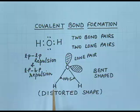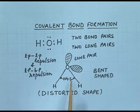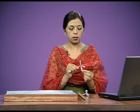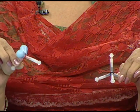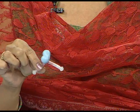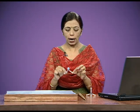Due to lone pair–lone pair and lone pair–bond pair repulsions, the water molecule has a distorted bent shape, and the H-O-H bond angle is 104.5 degrees. Comparing with a regular tetrahedron: when all four electron pairs around the central atom are bonded, the bond angle is 109.5 degrees. But in water, two of the four electron pairs are lone pairs, so the angle reduces from 109.5 degrees to 104.5 degrees and the shape is distorted from regular tetrahedral to bent.